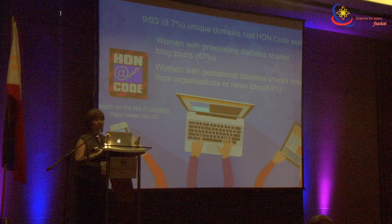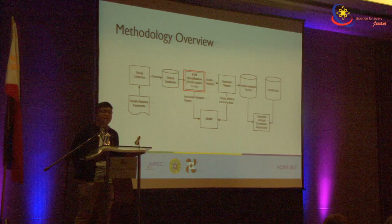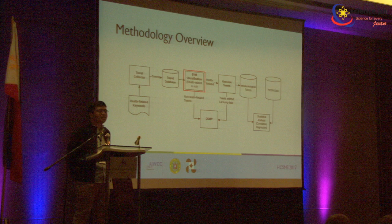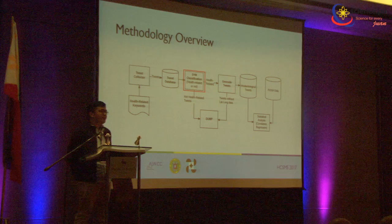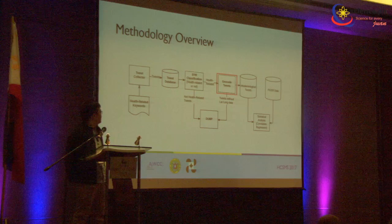What we are trying to achieve is to segregate tweets that could be used for health-related research from those that are not. Next is the need for geocoding tweets — meaning we try to locate tweets that don't have embedded location data in them.